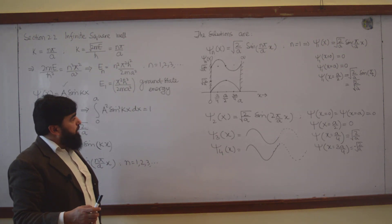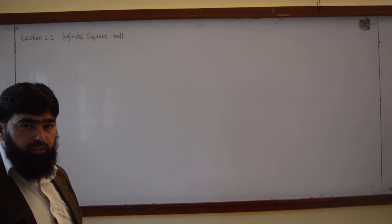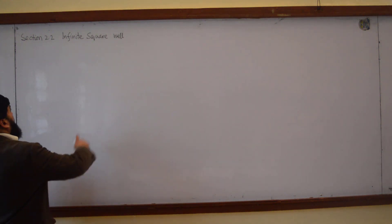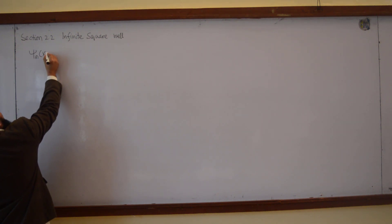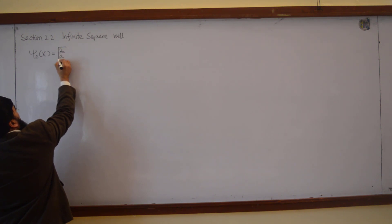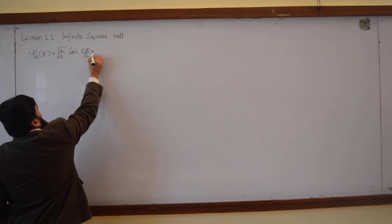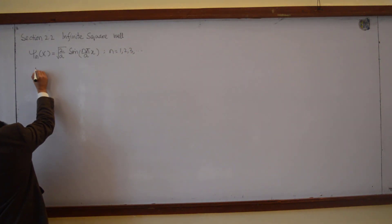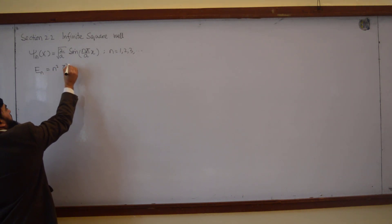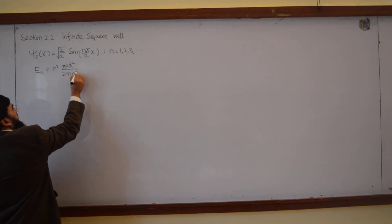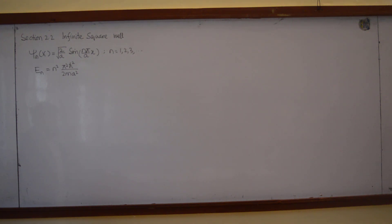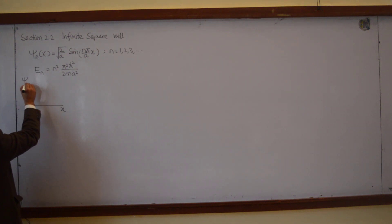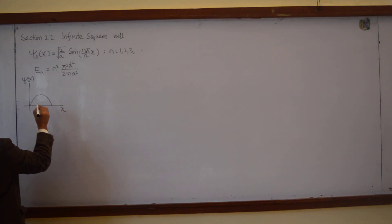Our wave function is ψₙ(x) = √(2/a) · sin(nπx/a), where n = 1, 2, 3, and so on. The particle has energy Eₙ = n²π²ℏ²/(2ma²). If we plot x versus ψ₁(x), with 0 and a as the boundary points, we get a half cycle.